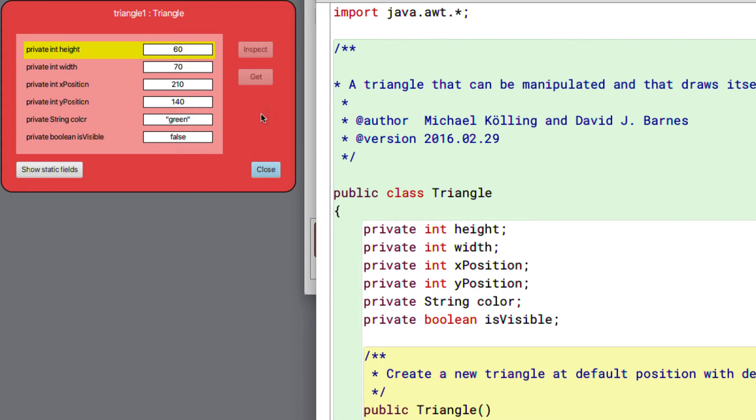And each one of those corresponds to an element that we see inside the inspector of the triangle object. So it's the fact that these source code elements are here inside the class definition that causes these definitions with particular data types to appear here within the inspector.